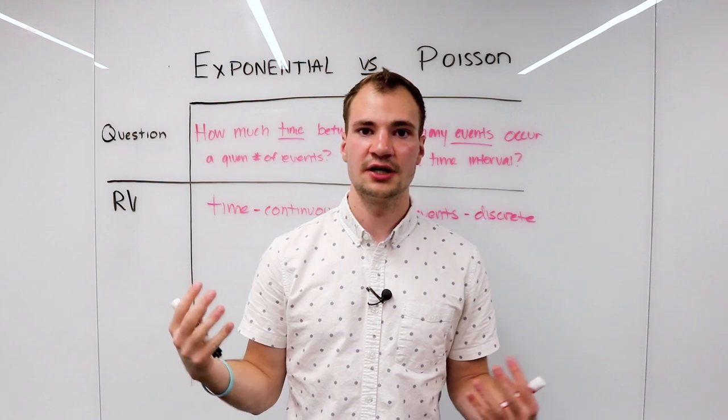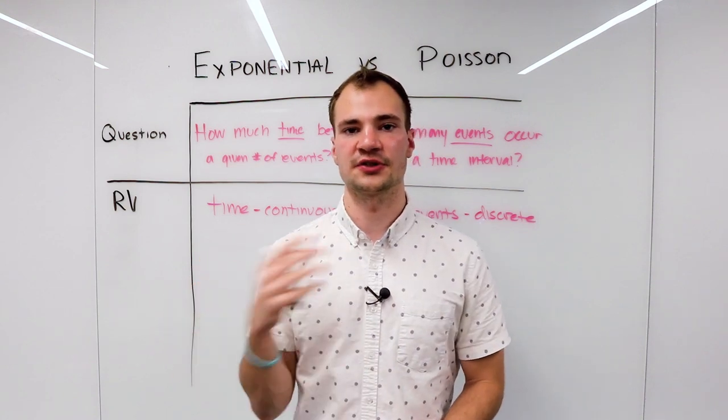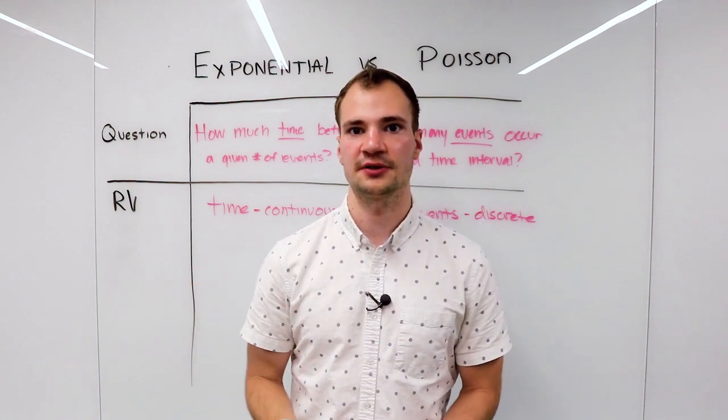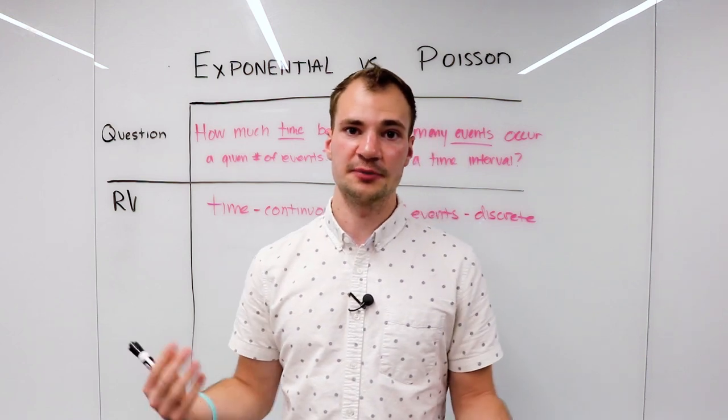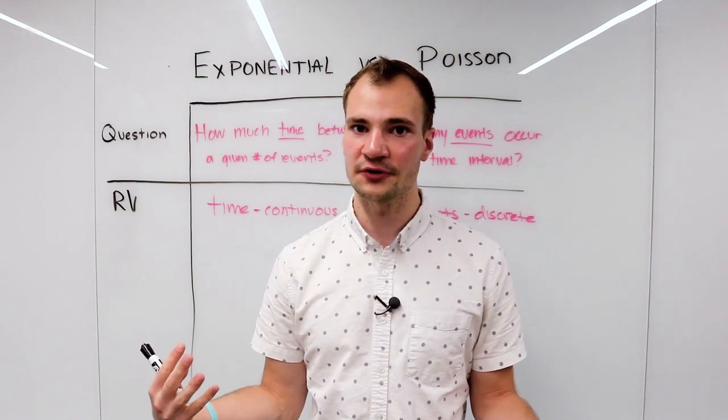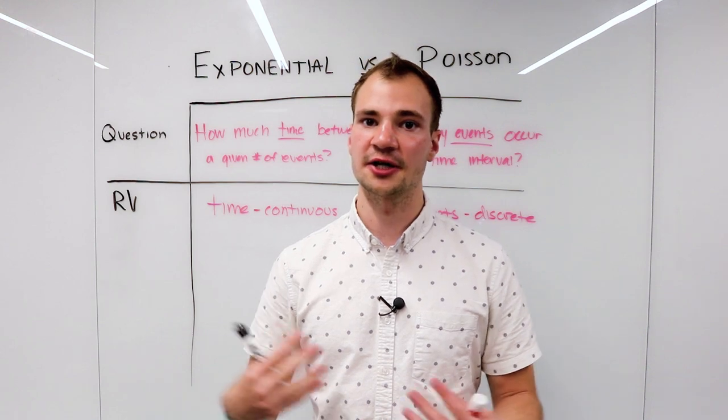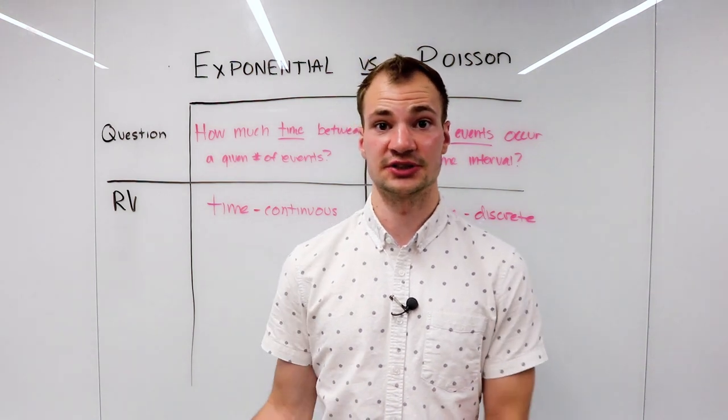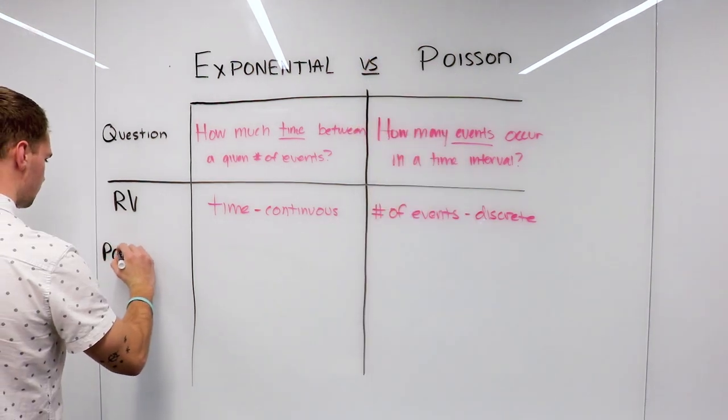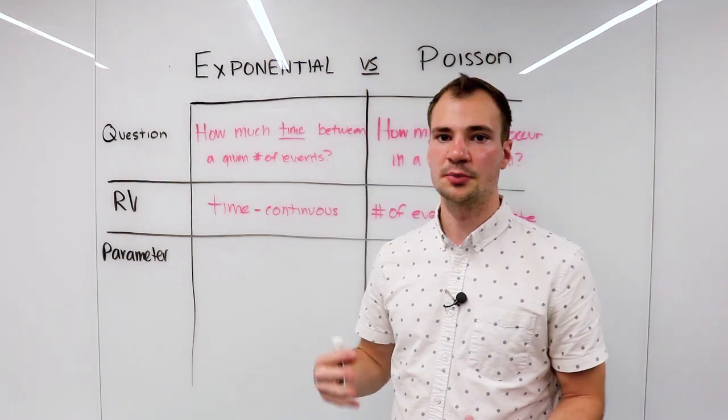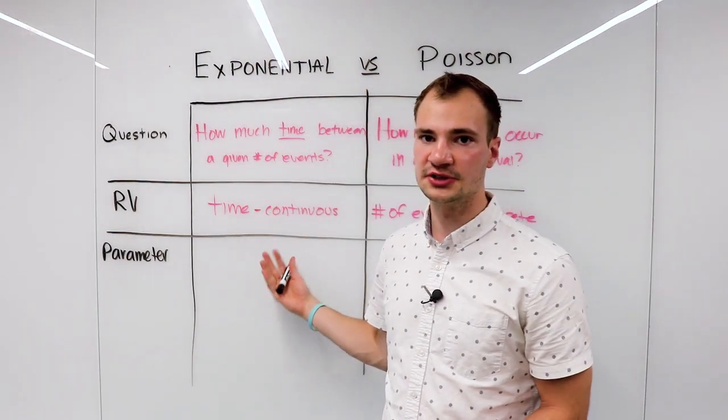Now that we know what the random variables represent, we can understand what the parameters of the distributions themselves represent. I'm not going to actually write up the formulas because I don't really care what the PDF and the CDF are right now, formulaically. Rather, I care about understanding when to use each distribution.